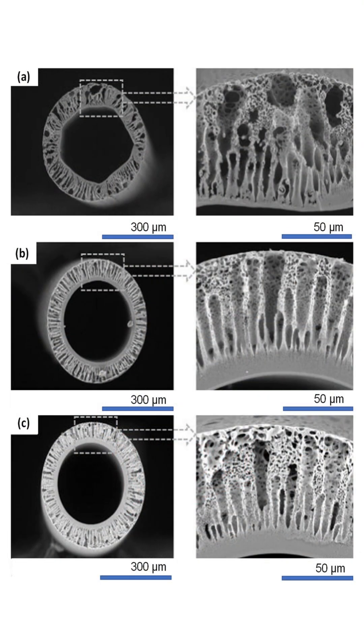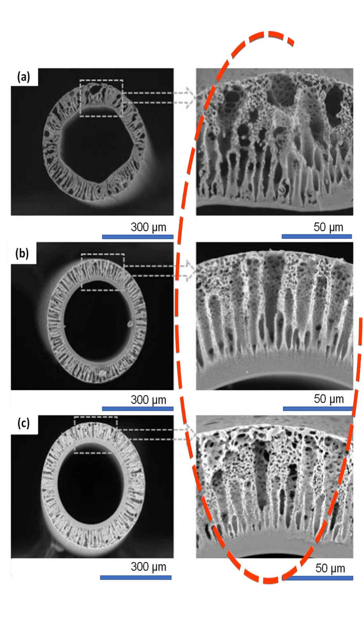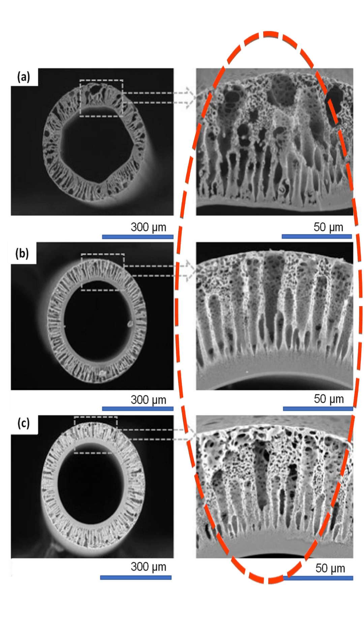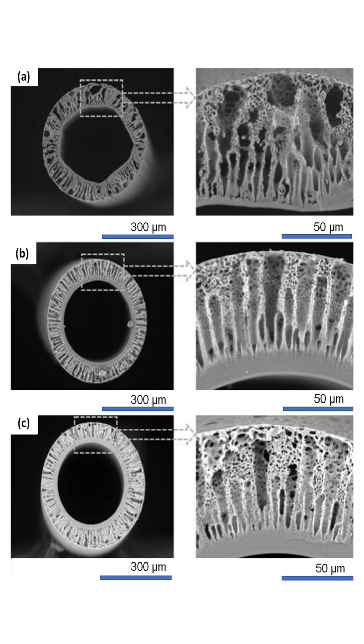Third, even if albumin reaches a pore, the inside is not a straight tunnel. Dialyser membranes form a 3D maze with bends, turns, and narrow internal choke points smaller than the nominal pore opening. So albumin simply can't orient and squeeze through these tight passages.